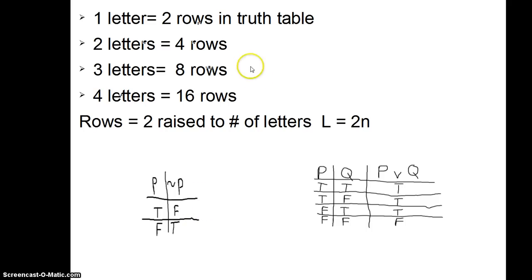If you have two letters, like P and Q, you're going to have four rows because there are four possible combinations of P and Q. It's like flipping a coin — you could have heads/heads, heads/tails, tails/heads, or tails/tails. So we capture all four with the four rows.